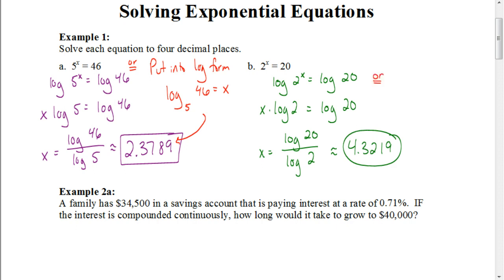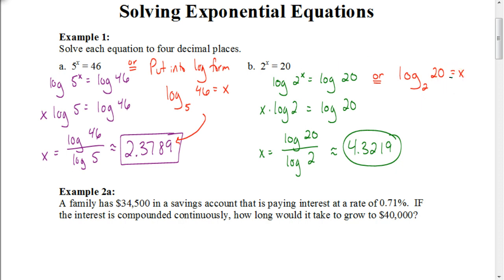Or there's another way you could do this — put it directly into log form. So you'd have a log with base 2, your value would be 20, and all logarithms equal exponents, so it's going to equal your exponent of x. Type that in your calculator and you get the same answer of 4.3219.